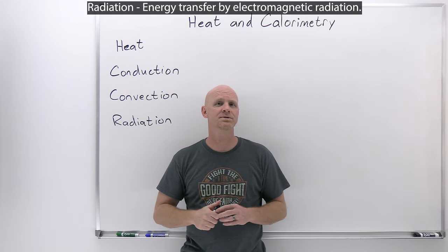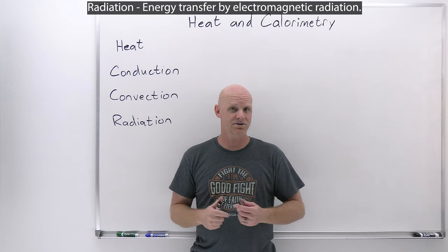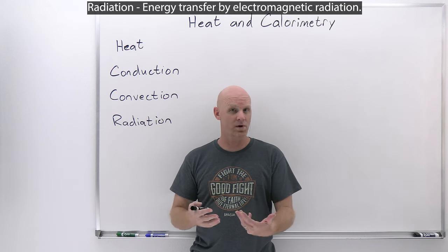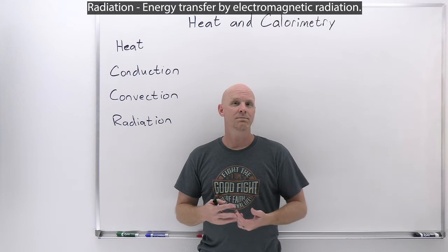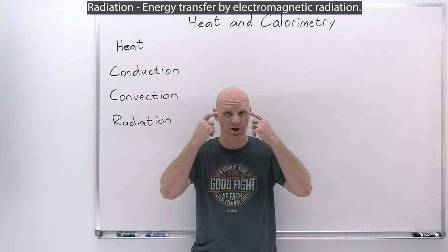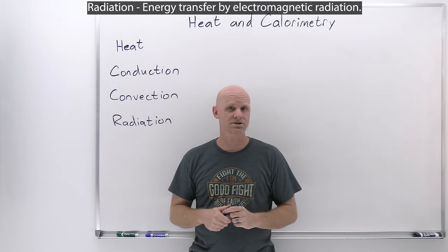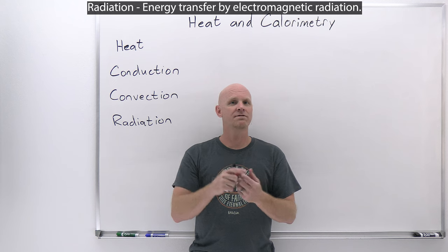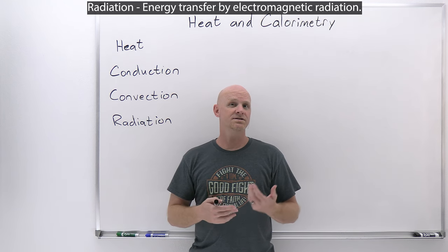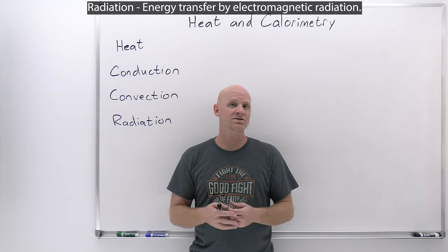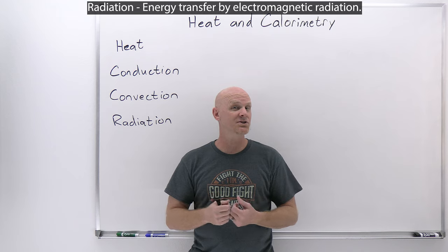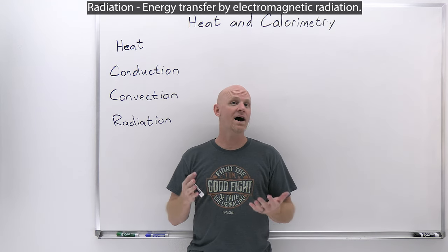Finally, heat can also be transmitted through electromagnetic radiation. If you look at a coil in your stove when you heat it up and it turns bright orange, the fact that it's changing colors means it's emitting electromagnetic radiation in the visible spectrum. When that electromagnetic radiation comes in contact with another object, it causes electronic and vibrational transitions, and the net result is that the atoms or molecules — in absorbing that energy — are going to be vibrating faster, i.e., have greater kinetic energy, i.e., have a higher temperature.